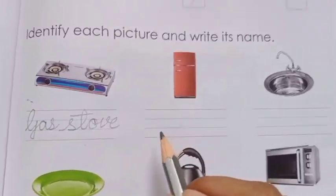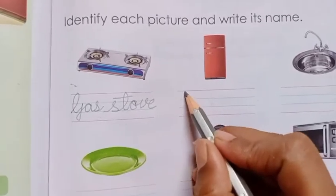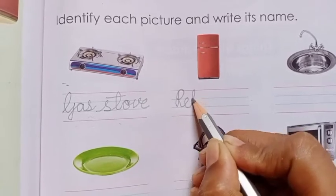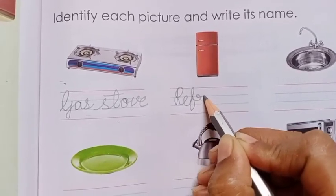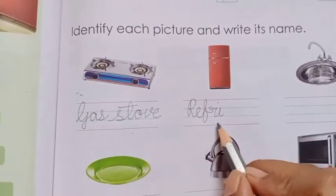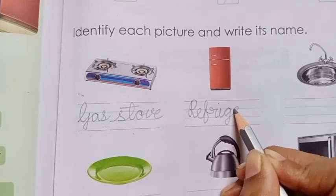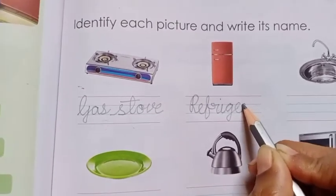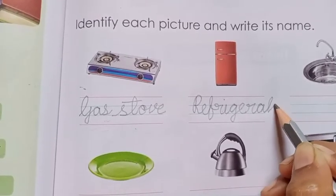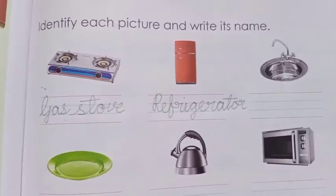Now see — refrigerator. Write capital letter R-E-F-R-I-G-E-R-A-T-O-R. Refrigerator. You have to read it like this: refrigerator.